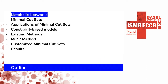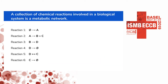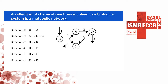Let's begin with background. Consider a biological environment with a specified boundary. A cell hosts its chemical reactions, and these reactions form a network. We call this network a metabolic network. Here we have a sample metabolic network with six reactions and four metabolites.